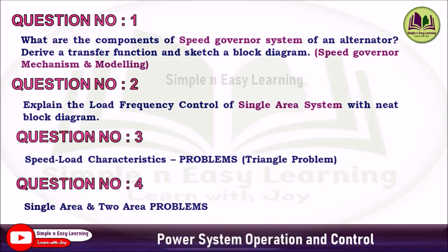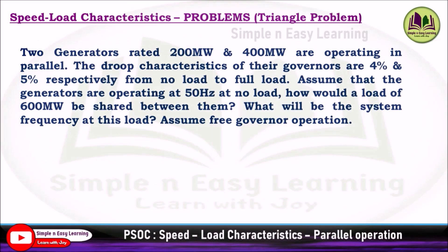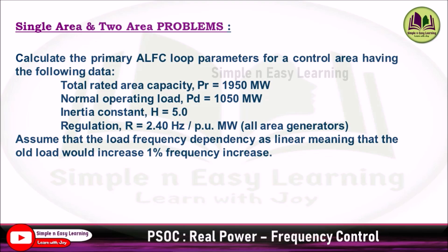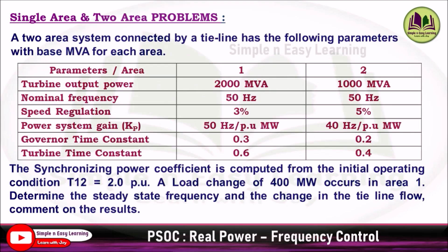Some example problems for speed load characteristics and single area and two area systems: for speed load characteristics, two generators with drooping characteristics are specified using two different methods. Details will be provided in the description — refer to those videos to understand the problems. Single area and two area system problems are also shown.